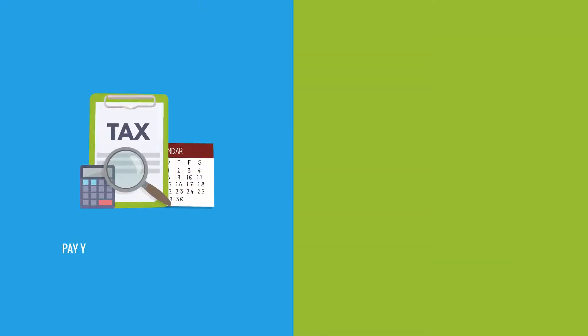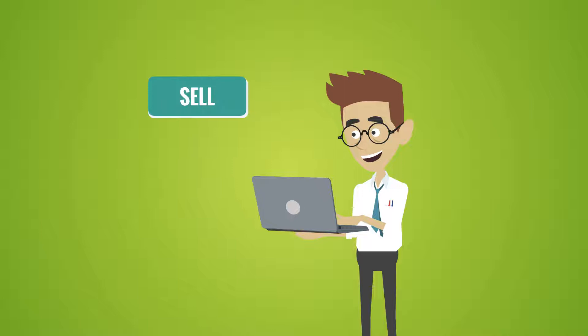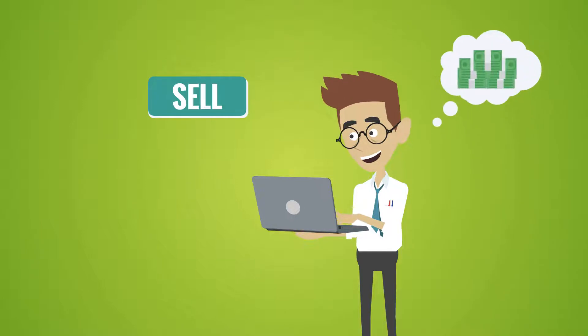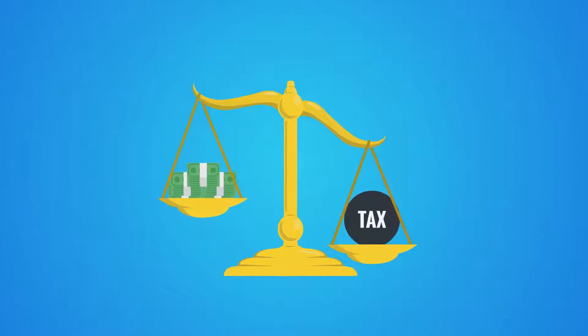By making an 83B election, you can pay your income taxes in advance, often before your company shares rise. If you sell shares for a profit in the future, you'll owe capital gains taxes, not regular income taxes, which are higher.